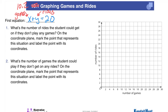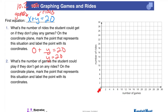First, what's the number of rides the student could get on if they don't play any games? If we don't play any games, how many rides could we get on — what's our y going to be if we spend all $20? Hopefully you're seeing that that would be 20 rides. On the x-axis we track the number of games, so that's 0, and the number of rides we want to be 20. That point is going to be right there — we can write it as the coordinate point (0, 20).